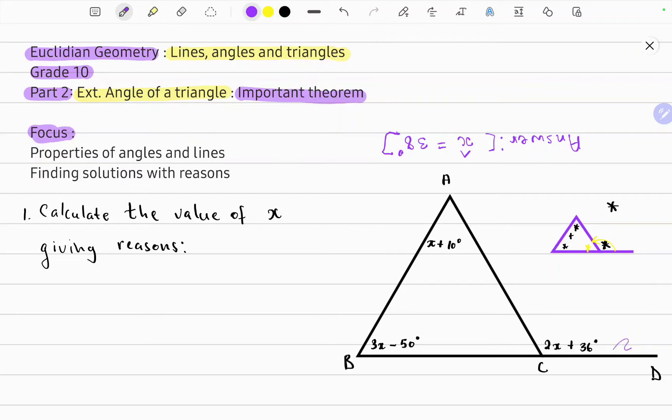The theorem states that the angle, the exterior angle that's on the outside, exterior means outside, is equal to the sum of the angles that's opposite on the inside. You'll notice that this angle is not opposite but is rather adjacent or next to the exterior angle.